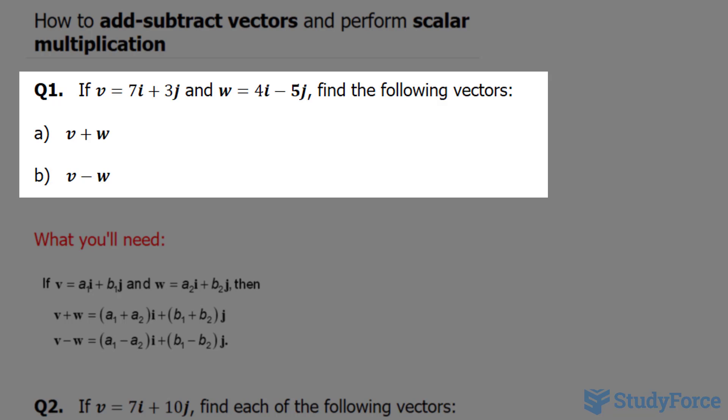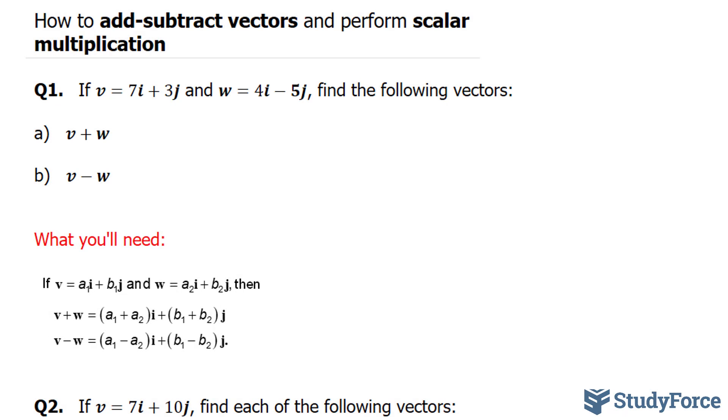The first question reads, if the vector v is 7i plus 3j and w is equal to 4i minus 5j, find the following vectors: v plus w and v minus w.